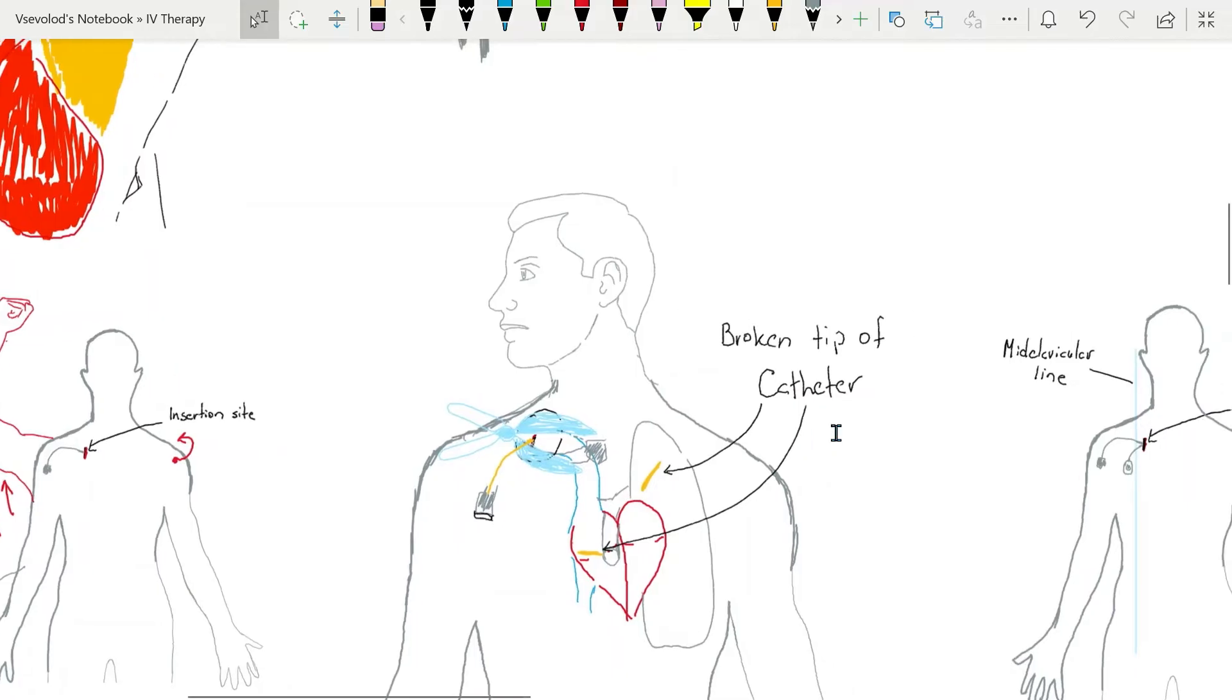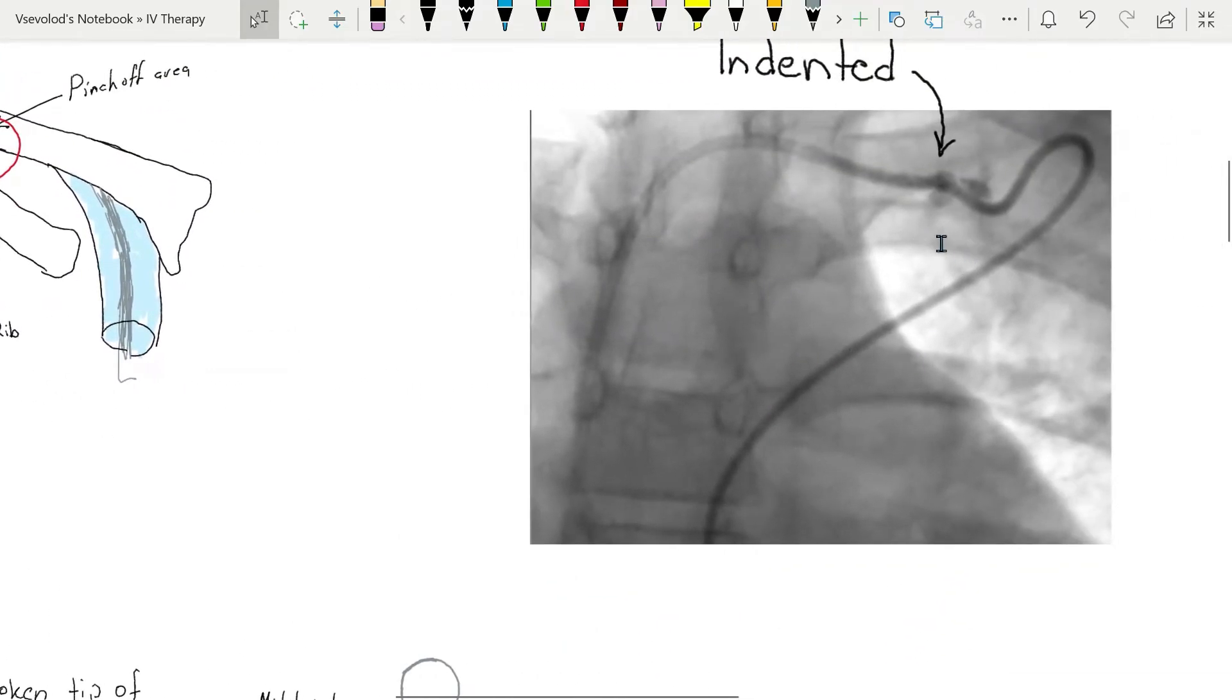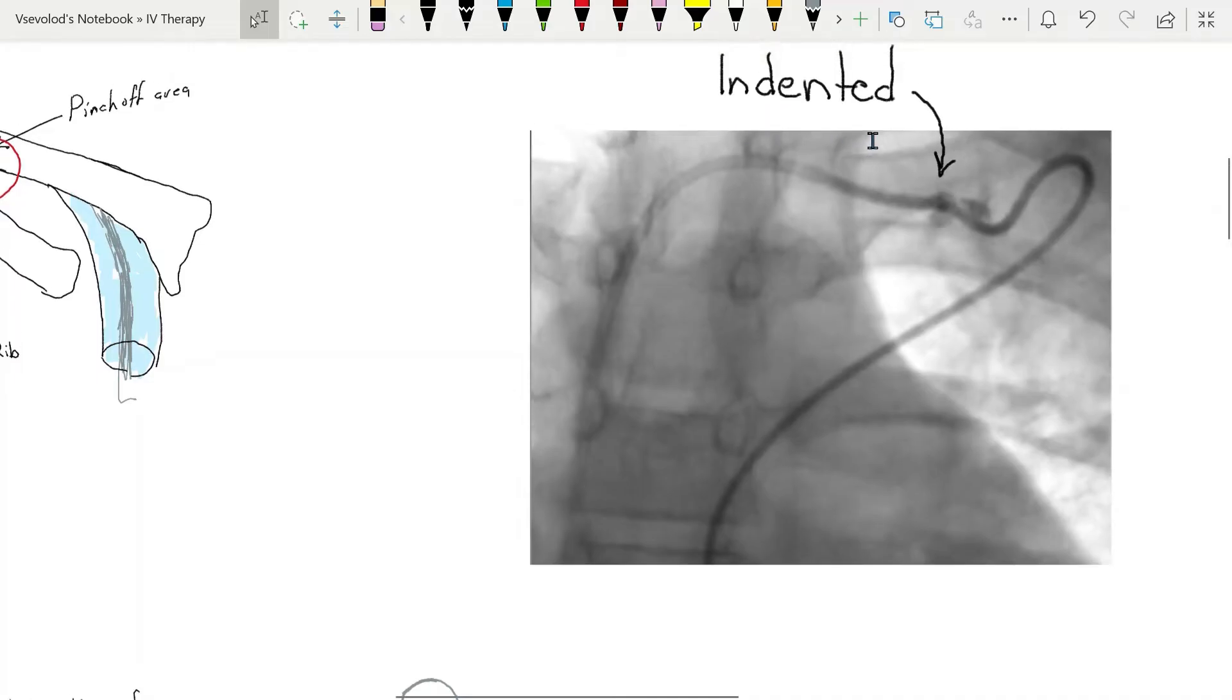Pinchoff syndrome may be preceded by a finding of Pinchoff sign on the chest x-ray in which it is visible that the catheter is indented as it passes beneath the clavicle.